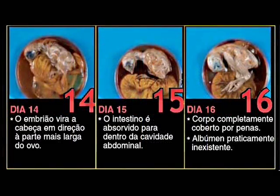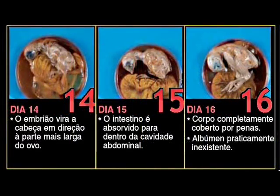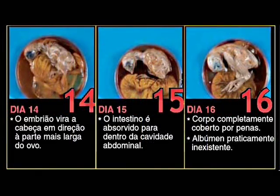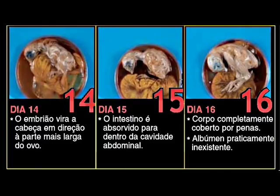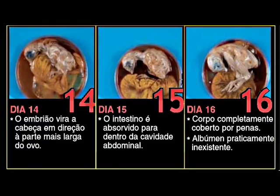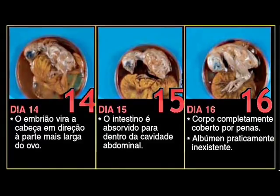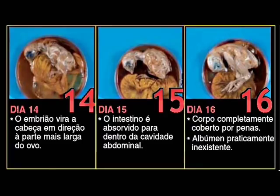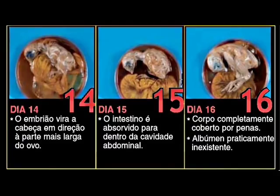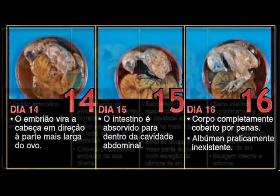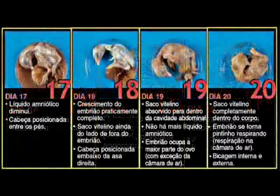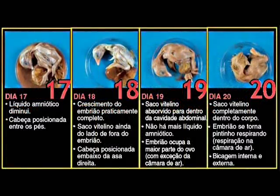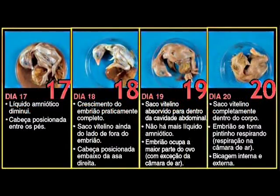O embrião vira a cabeça em direção à parte mais larga do ovo. O intestino é absorvido para dentro da cavidade abdominal. Corpo completamente coberto por penas. Albômen praticamente inexistente. Líquido amniótico diminui.